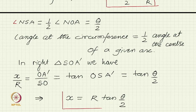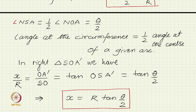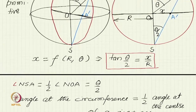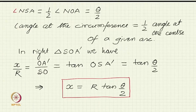You can verify this for the two special cases. For the vertical direction, theta is 0, tan(0/2) is 0, so x is 0 — the vertical direction projects to the centre. For the horizontal direction, theta is 90°, theta/2 is 45°, tan(45°) is 1, so x equals R — it projects onto the primitive circle. For other directions, use this formula, and note it is not linear: if you are at distance R/2, you cannot assume you are at 45°; you must solve the trigonometric equation to get theta.